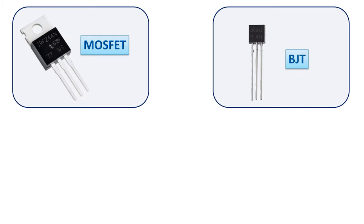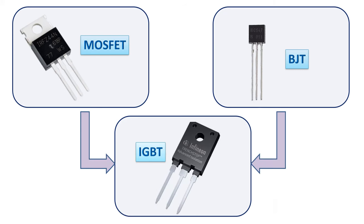The IGBT is the combination of BJT and MOSFET, and its name implies the fusion between them. "Insulated gate" refers to the input part of the MOSFET having very high input impedance — it does not draw any input current; rather, it operates on the voltage at its gate terminal.